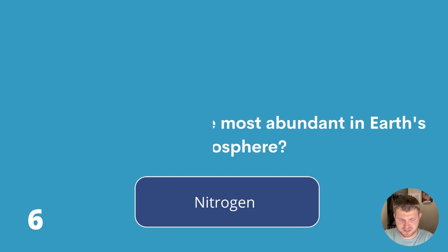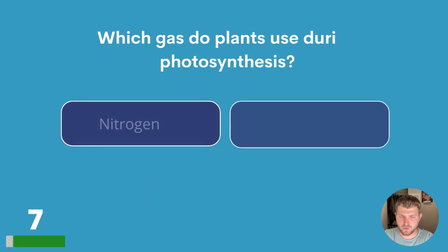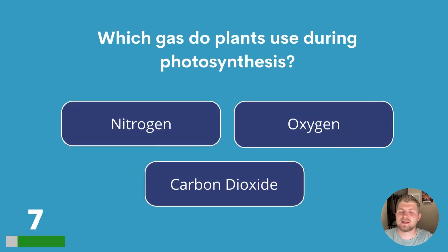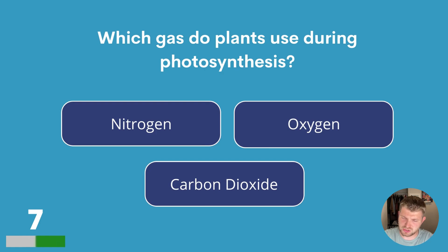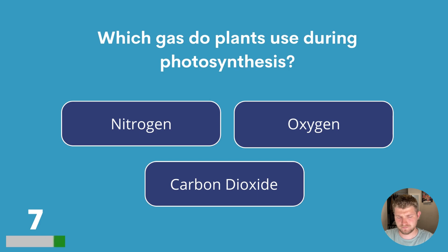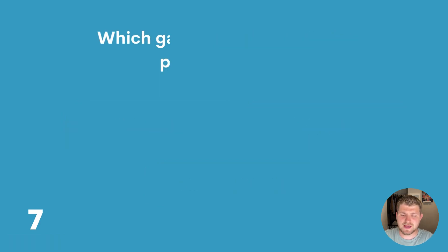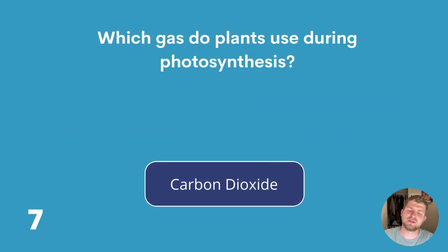Question seven. Which gas do plants use during photosynthesis? Nitrogen, oxygen or carbon dioxide? They use carbon dioxide.